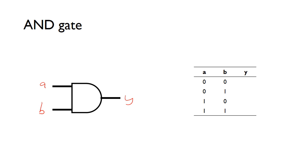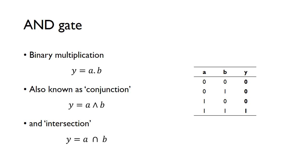As the name suggests, for an AND gate the output Y will only be a one when both A and B are a one. For all other situations: zero and zero gives zero, zero and one gives zero, one and zero gives zero. Only when both A and B are one do we get a one on the output. An AND gate is used for binary multiplication, and the logical function is written as A dot B. It's also called conjunction or intersection.